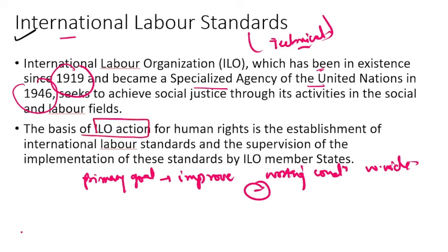The basis of ILO action for human rights is the establishment of international labor standards and the supervision of the implementation of these standards by the ILO member states. One is that the international labor standards established are worldwide applicable — every country will follow them and accordingly structure their labor laws. For example, if India is making labor laws, it will look at what international labor standards say and implement them. These standards of establishment plus supervision, if not implemented properly, are your international labor standards.